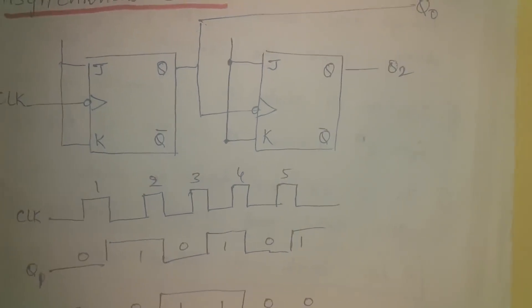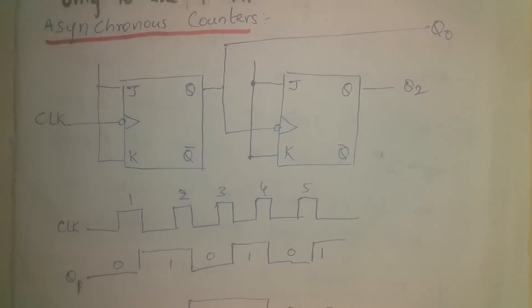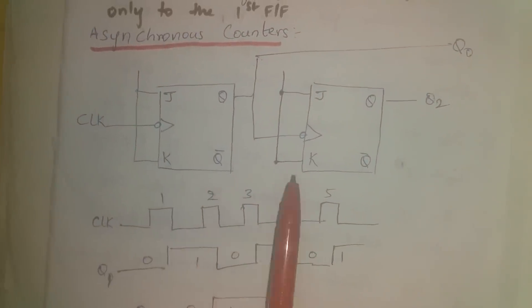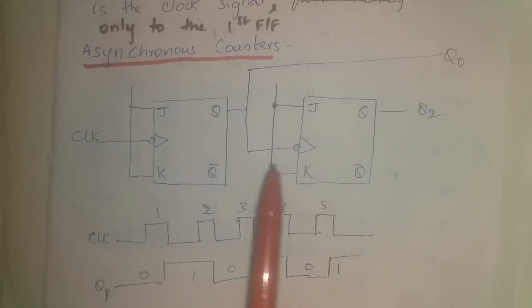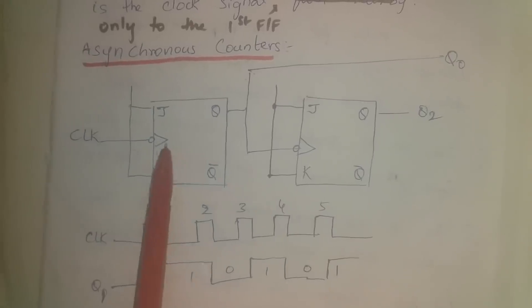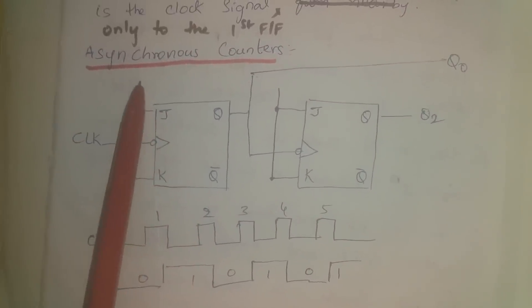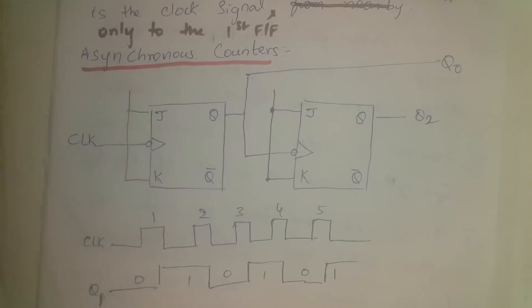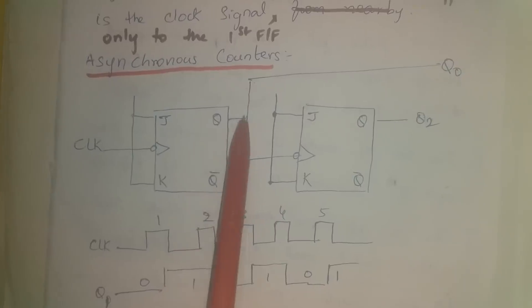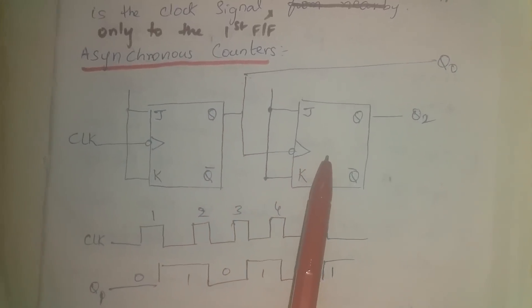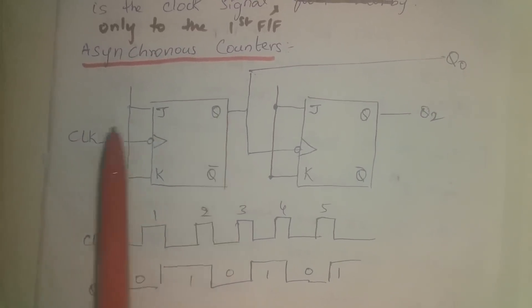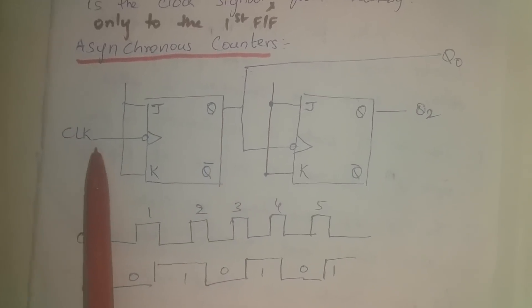Let's look at a simple asynchronous counter — a mod-4 counter, or a 2-bit counter. To store 2 bits you need 2 flip-flops. Here, JK flip-flops are used with both J and K tied together and a high applied to J and K. The clock is applied to the first flip-flop, and the output of the first flip-flop is the clock to the next flip-flop.